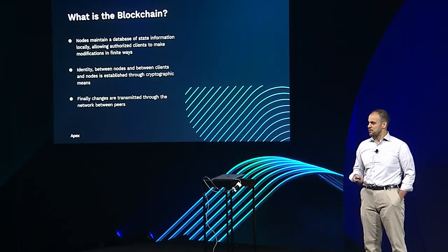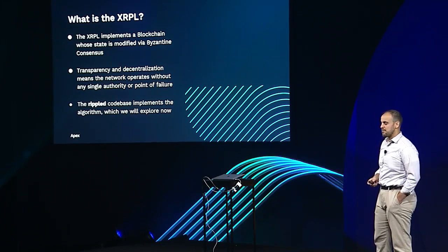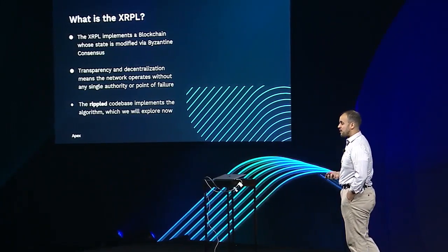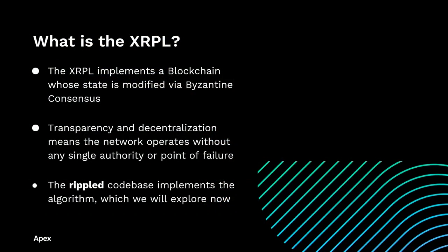Nodes — and depending on which blockchain we're talking about, these can refer to miners in the case of proof of work, stakers, or validators in the case of XRP — maintain a database of state information which clients modify in finite ways. Identity between those nodes is established through cryptography, which is also used to track changes in the data set in an immutable way. Those changes are transmitted through the network in a peer-to-peer manner. The XRPL implements a blockchain whose state is modified through Byzantine consensus. Transparency and decentralization means the network operates without any single point of failure or single authority.